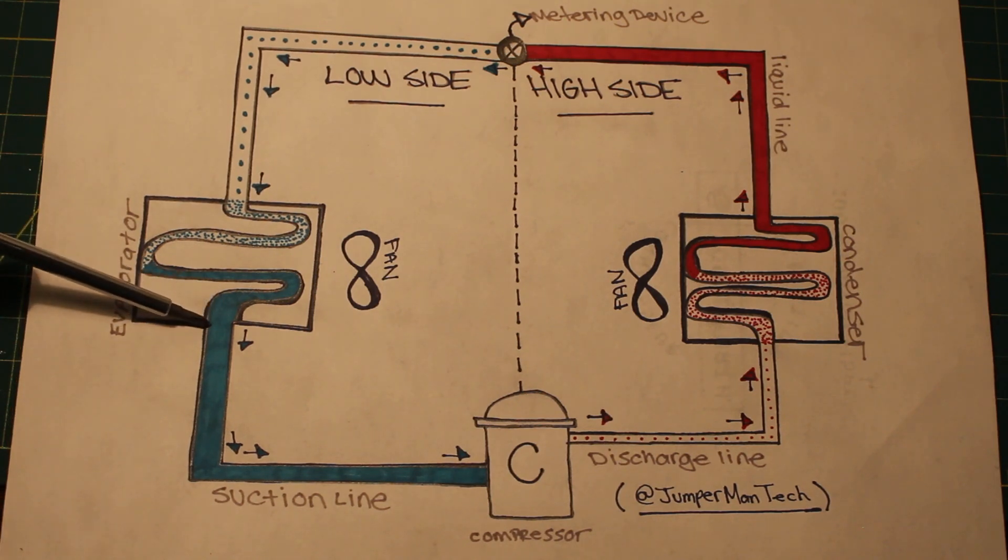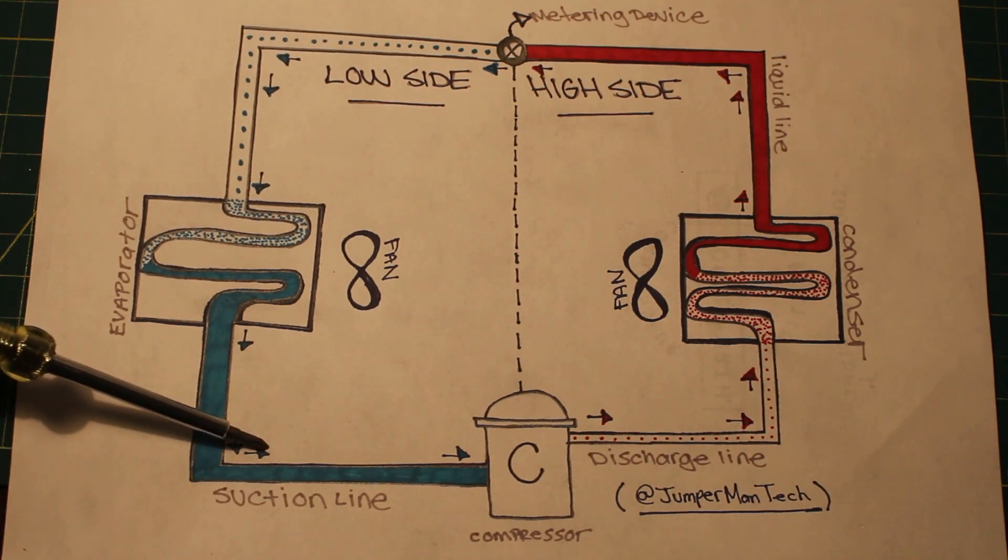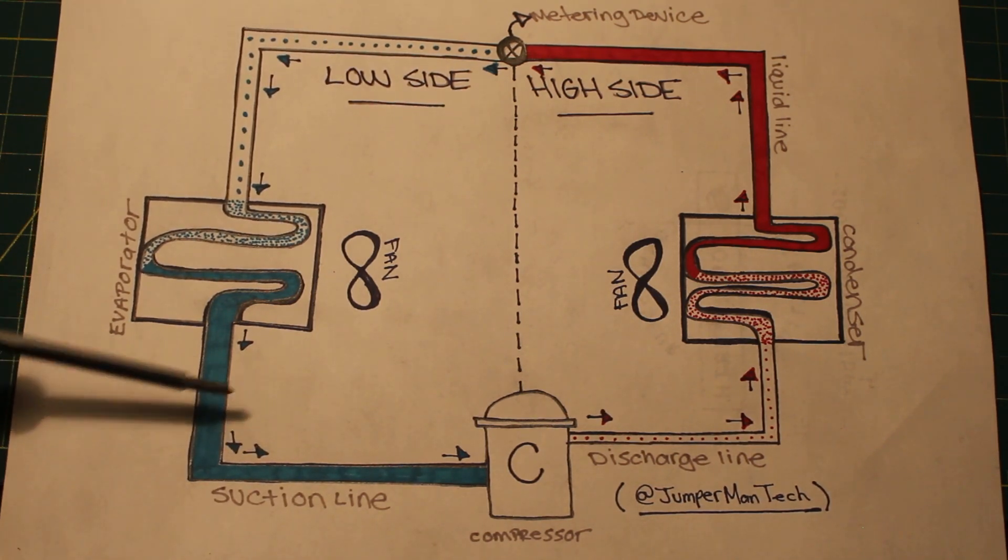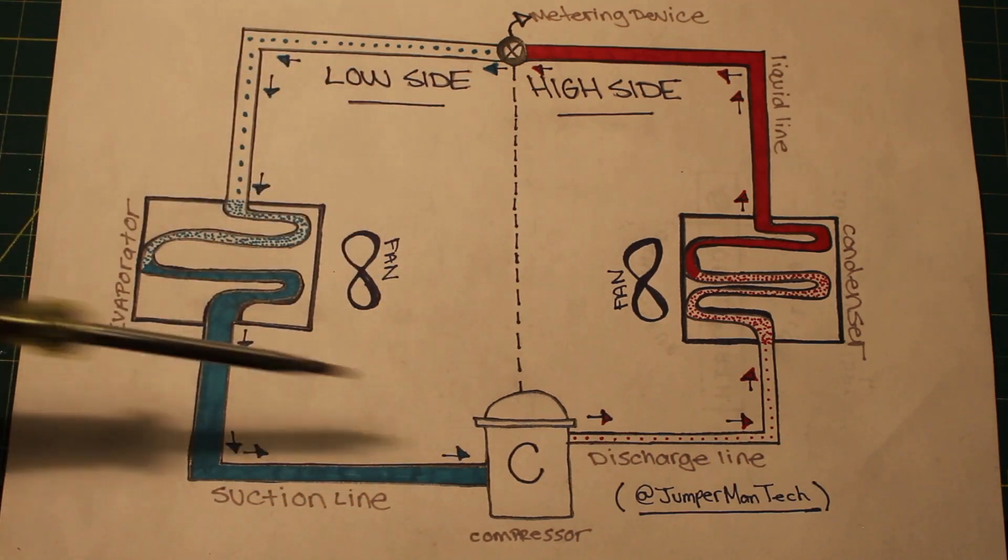Leaving the evaporator is a suction line. Once again, low pressure, low temperature, superheated vapor. Enters our compressor, and that cycle just repeats and repeats.